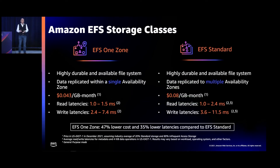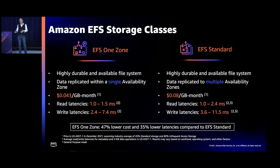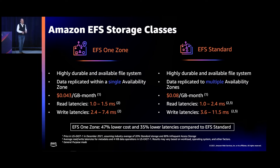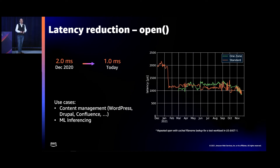Let's contrast that with EFS OneZone. Just like standard, OneZone is a highly available and highly durable file system that replicates data within a single availability zone. Using lifecycle management and the same standard ratios, the cost for OneZone storage is 4.3 cents per gigabyte per month. Read latencies are between 1 and 1.5 milliseconds, and write latencies are between 2.4 and 7.4 milliseconds. EFS OneZone latencies are 35% lower on average than standard latencies, at a 47% lower cost.